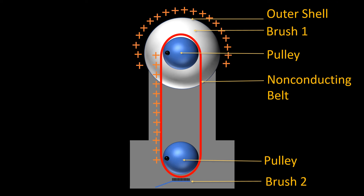The belt transfers charge to the smaller shell and then through brush one we can transfer the charge to the outer shell. Gradually the outer shell will have a large amount of charge, and that is how it can produce a large electric field. The purpose of the electric field is to accelerate charged particles — that is the 1d graph generator.